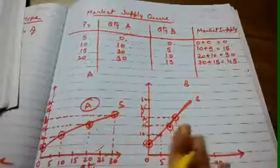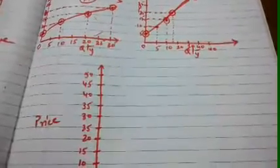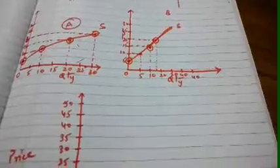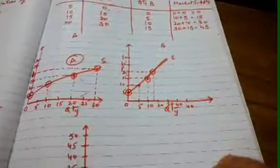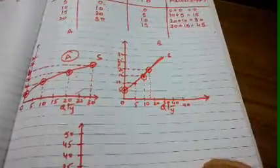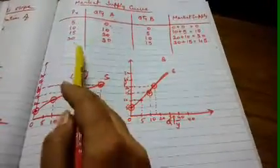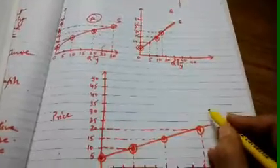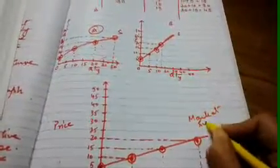The market supply schedule is the summation of Firm A and Firm B. We are going to plot the summation for both firms. When the price was rupees 5, market supply was zero. When the price was 10, 15 units were supplied in the market. At rupees 15, 30 units were supplied. At 20 rupees, 45 units were supplied by both firms combined. When we join these points, we get the market supply curve.